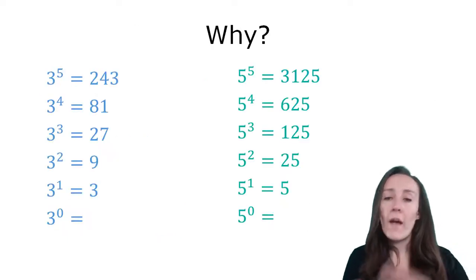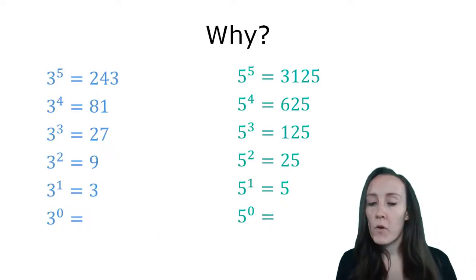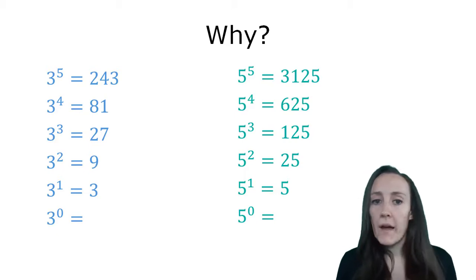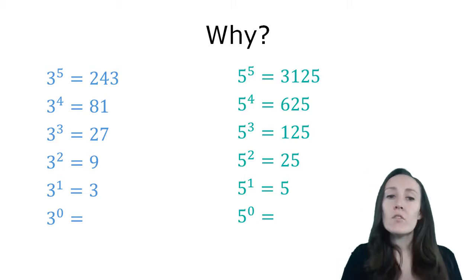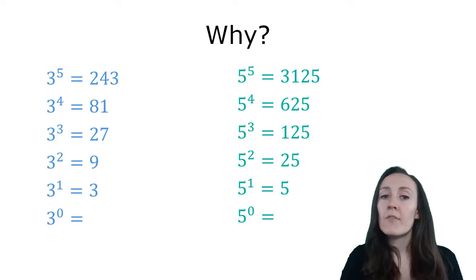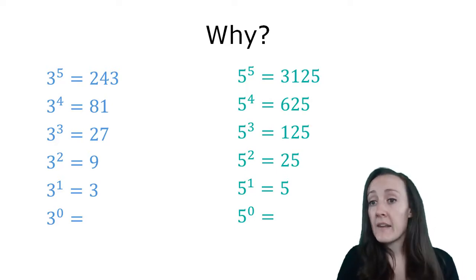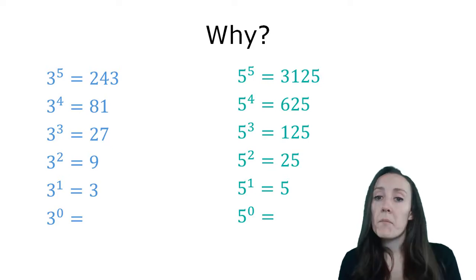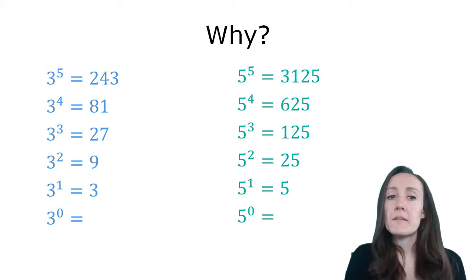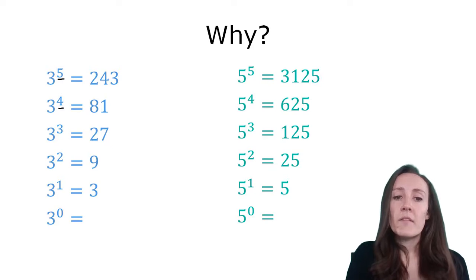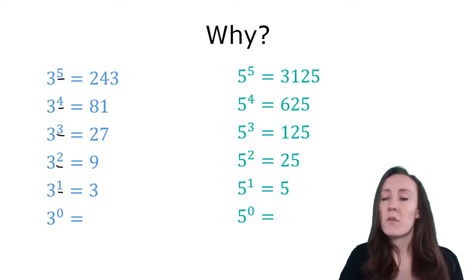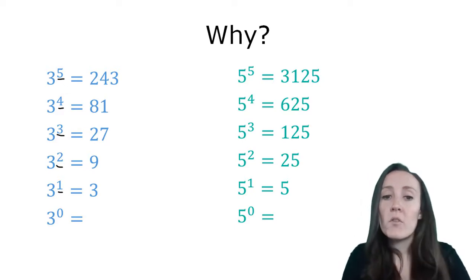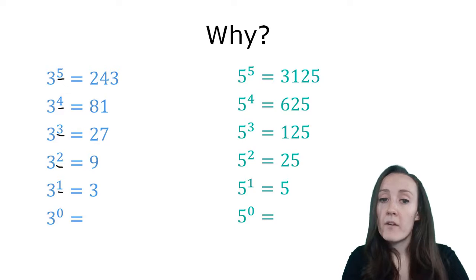But first I want to look at why does anything to the zero power equal one — like, where did the one come from? The answer to that comes from a pattern that you can see if you list out all of the powers of any number. I chose the numbers 3 and 5, but you could choose any number and the pattern would still be consistent. If you list out the exponents in decreasing order — 5, 4, 3, 2, 1, etc. — and you simplify out those powers, you'll notice there's a consistent pattern in the answers.